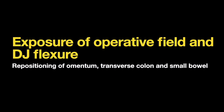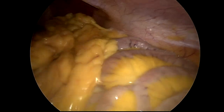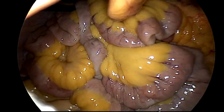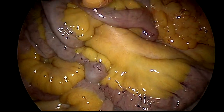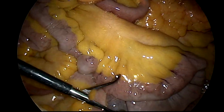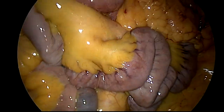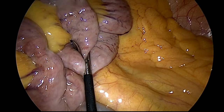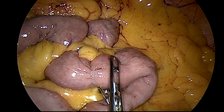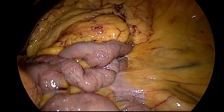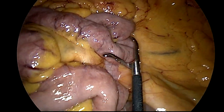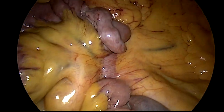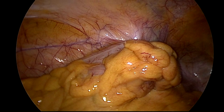It is crucial to expose the operative field, which includes exposure of the root of the mesentery, DJ flexure and the inferior mesenteric vein. It is worthwhile spending a few moments here before rushing to the actual dissection. The omentum and transverse colon is rolled up and positioned beneath the liver as shown. The small bowel is arranged loop by loop in the right upper quadrant, making sure to position them in a proximal to distal manner. The lesion is seen over there.